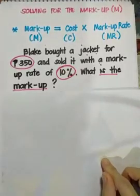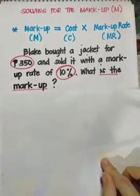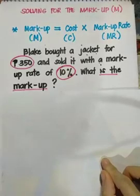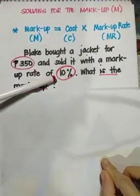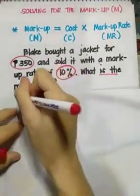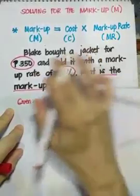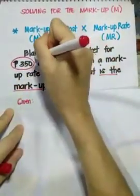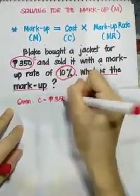When solving this problem, it's very important to understand what we read so that we can identify what is given and what is needed or asked. In this case, our givens are 350 pesos — which is the cost of the jacket, or the original price, so C equals 350 — and 10%, which is the markup rate, so MR is 10%.